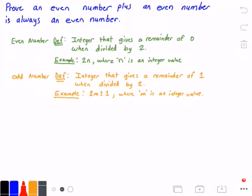Right below it in orange I have the definition of what it means for a number to be odd. It states that an odd number is an integer that gives a remainder of 1 when divided by 2, and an example of this is 2m plus or minus 1 where m is some arbitrary integer value as well.